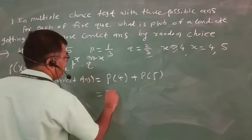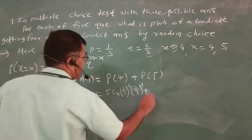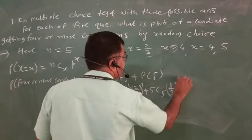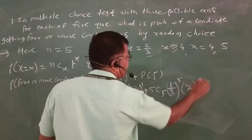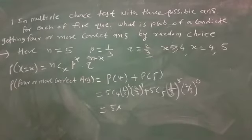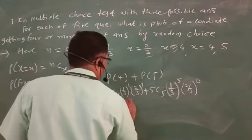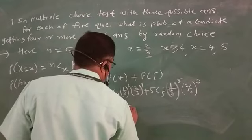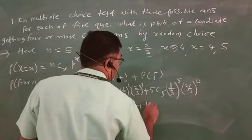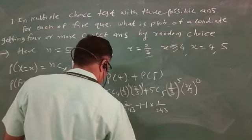P(4 or more correct answers) equals 5C4 × (1/3)^4 × (2/3)^1 plus 5C5 × (1/3)^5 × (2/3)^0. Since 5C4 = 5, this gives 5 × (1/3)^4 × (2/3) plus 1 × (1/3)^5, which equals 10/243 plus 1/243, that is equal to 11/243.